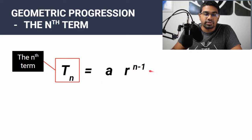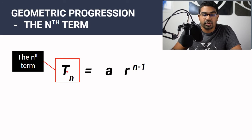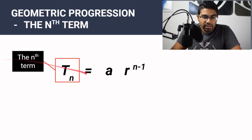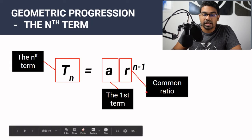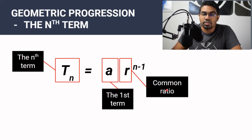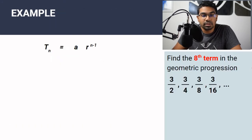This is the formula to find TN, the nth term for geometric progression. TN represents the nth term, A is the first term, and R is the common ratio. Let's look at an example.